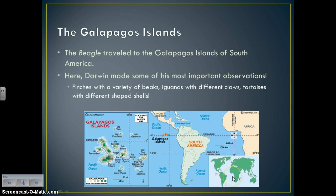Sounds like a great job. The HMS Beagle traveled to the Galapagos Islands of South America, off the coast of Ecuador. This is where Darwin made some of his most important observations and drew his first conclusions regarding evolution. He observed finches with a variety of beaks — the go-to example when discussing Darwin — as well as iguanas with different claws and tortoises with different shaped shells.